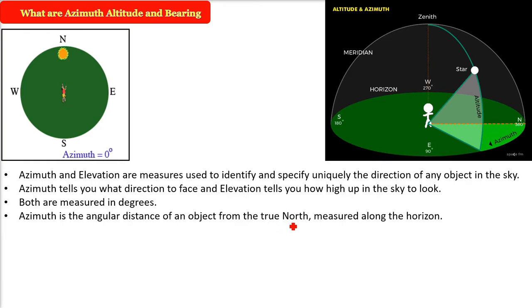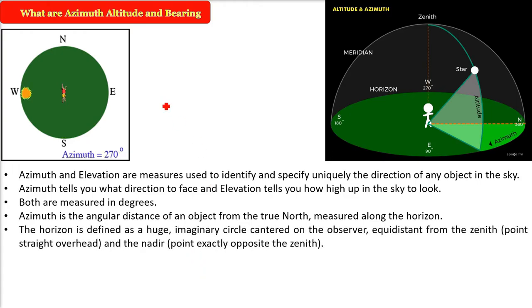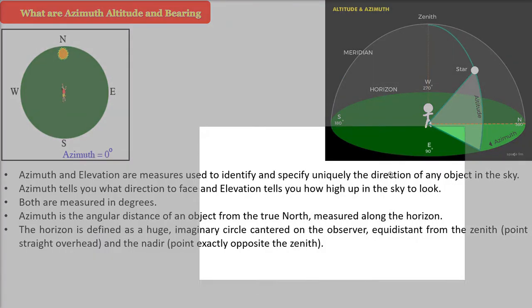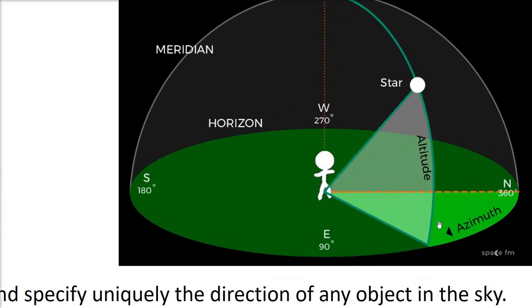Azimuth is the angular distance of an object from the true north, measured along the horizon. What is horizon? Horizon is what you see where the sky and land meet. If you go 360 degrees and see the circle surrounding you, which is the combination of where the land and sky meet, that is the horizon.